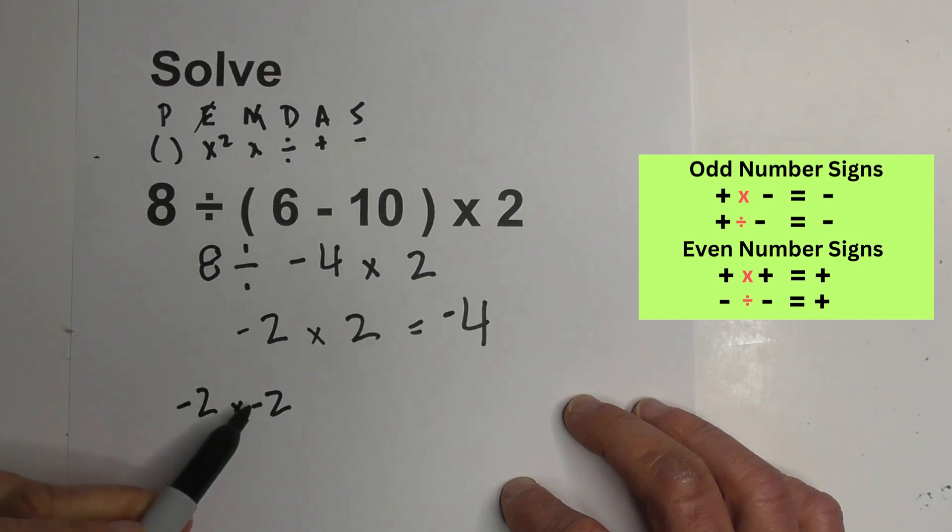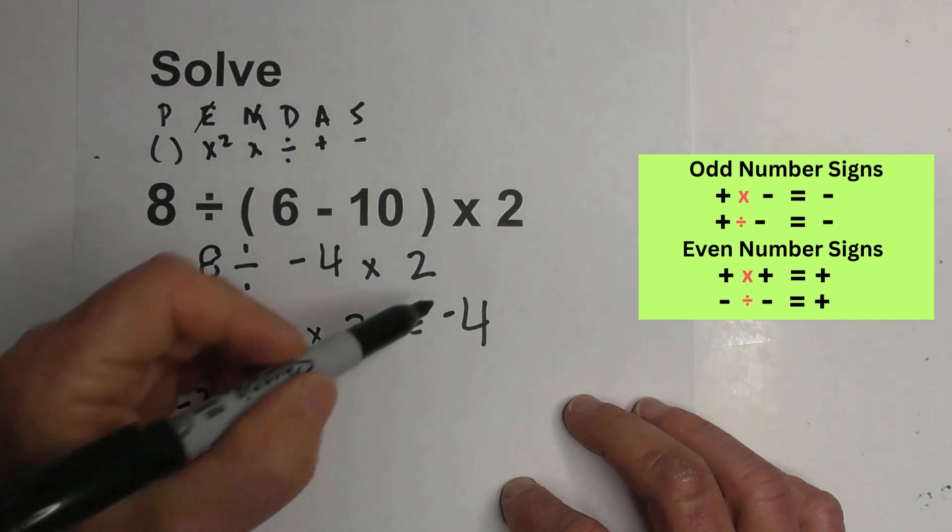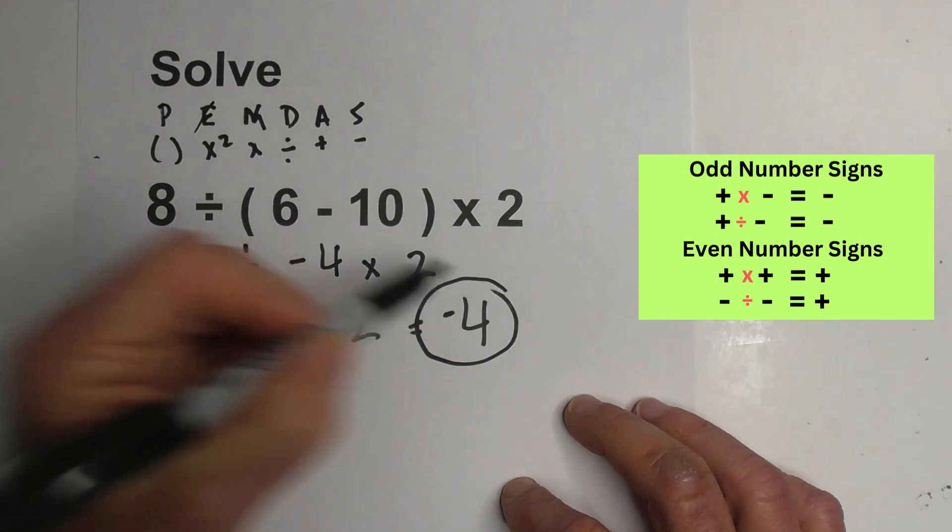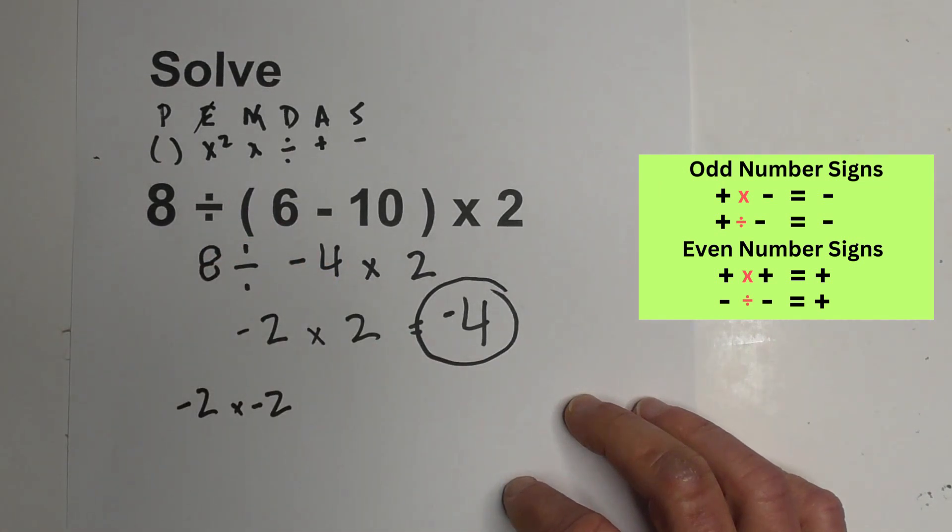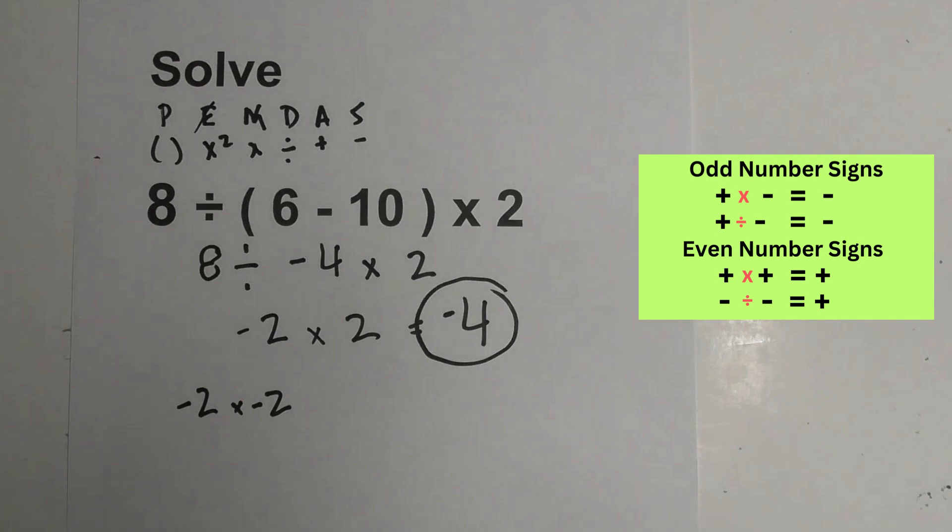One plus two, then it's positive. So anyway, here is our answer. It is negative 4. I hope that was helpful in figuring out the order of operations and solving this problem.